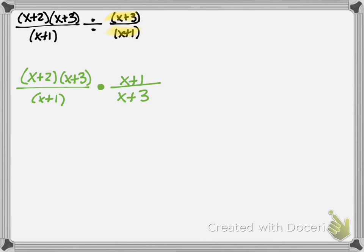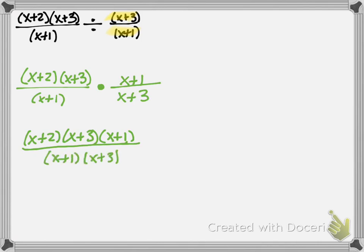When we multiply, we make one big fraction: everything on top of the two little fractions goes on top of the big fraction — so (x+2), (x+3), and (x+1). Everything on the bottom goes on the bottom — so (x+1) and (x+3). Now everything's factored, so we check what cancels: (x+1) cancels with (x+1), and (x+3) cancels with (x+3). The only thing left is x+2, and that's our answer.